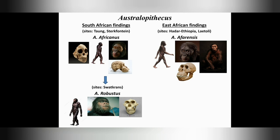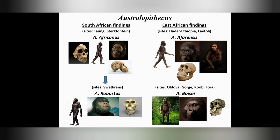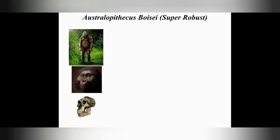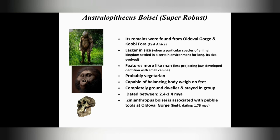The famous Lucy was an afarensis. Another type of East African Australopithecus was Australopithecus boisei, considered 'super robust' because of its larger size and more human-like features. They were capable of balancing their body weight on feet and were considered completely ground dwellers who stayed in groups. They were dated between 2.4 to 1.4 million years ago. Zinjanthropus boisei is associated with pebble tools at Olduvai Gorge, East Africa — so, were they the first tool makers? We'll see later.